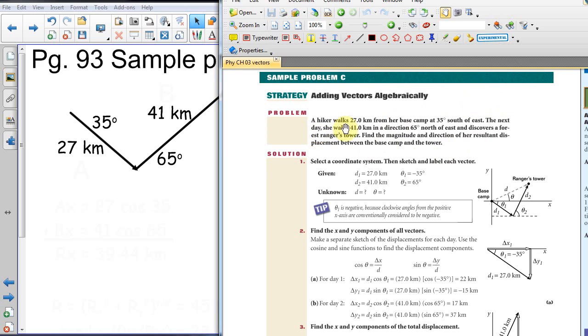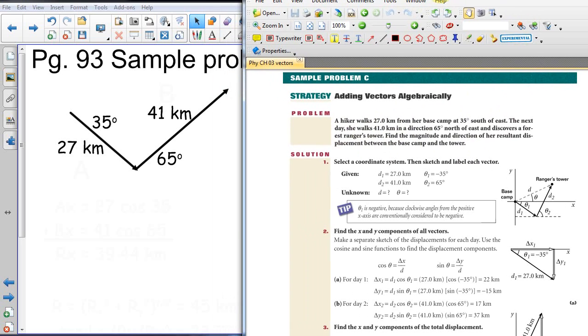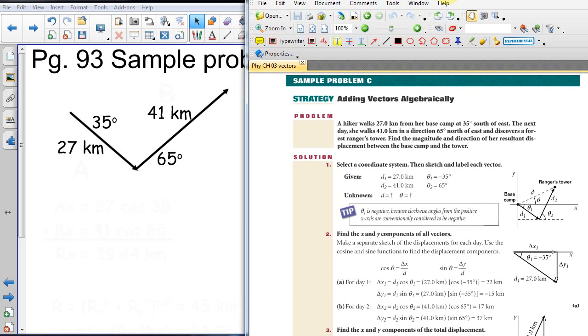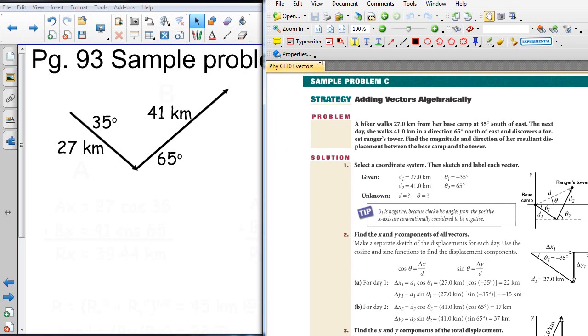General idea here, you got this hiker walking 27 kilometers from her base camp at 35 degrees south of east. The next day she walks 41 kilometers in a direction 65 degrees north of east. Find the magnitude and direction of her displacement between the base camp and the tower. So sample problem like this, you're not given any kind of picture at all, so we have to draw it ourselves.